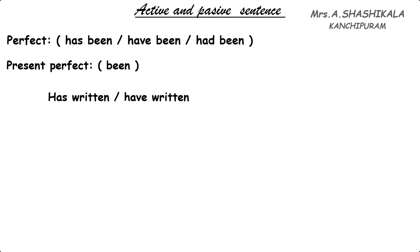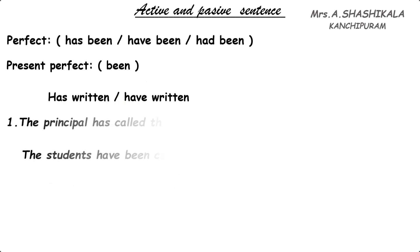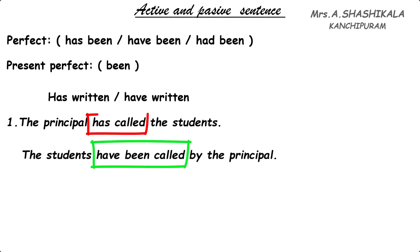In the active we use 'has written' or 'have written'. 'Has' is used for singular and 'have' is used for plural. See the example: 'The principal has called the students.' In the active voice we have written 'has called', where 'has' follows the past participle. We just add 'been' in between 'has' and 'called'. The object 'the students' is plural, so we use 'have'. The answer is: 'The students have been called by the principal.'